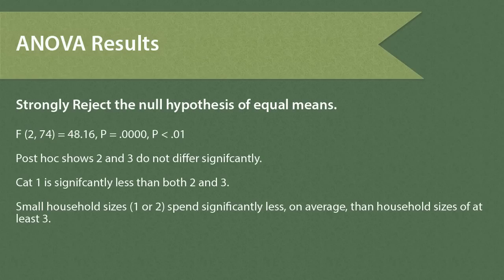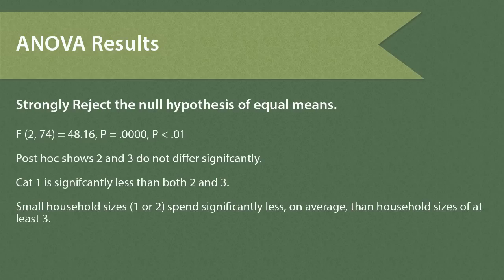Stating our results formally, we strongly reject the null hypothesis of equal means. Household size does have an effect on spending. Our evidence: F for 2 and 74 degrees of freedom equals 48.16, which is highly significant. Our post-hoc analysis shows the specific effects of household size category on average spending. Categories 2 and 3 do not differ significantly. However, category 1 is significantly less than both categories 2 and 3. In practical terms, small household sizes — category 1, defined as a household size of 1 or 2 — spend significantly less on average than household sizes of at least 3.